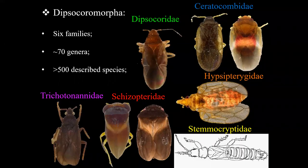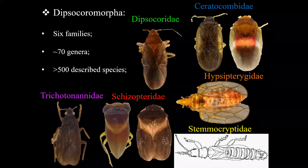This infra-order is currently divided into six families, 70 genera, and more than 500 species. I focused on the family Schizopteridae, which is the largest Dipsochromorphan family.